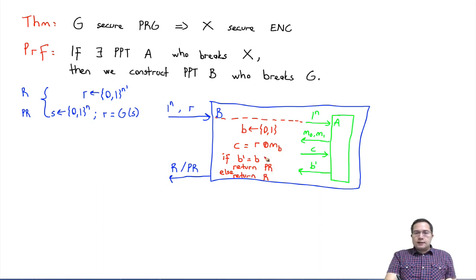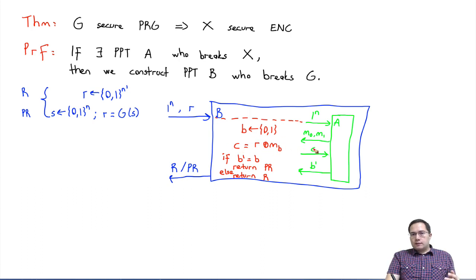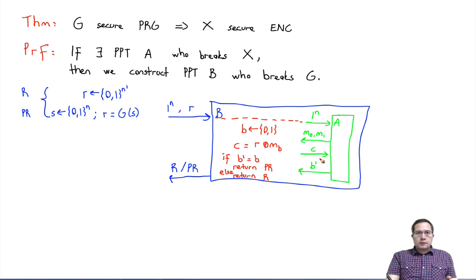Intuitively, the reason here is that if R is a pseudorandomly generated value, then what we did is exactly what A is expecting — we gave him an encrypted message, and by our assumption that A breaks X, he should have 1/2 plus non-negligible probability of guessing correctly. On the other hand, if R was random, this is exactly a one-time pad, which we know is perfectly secure.